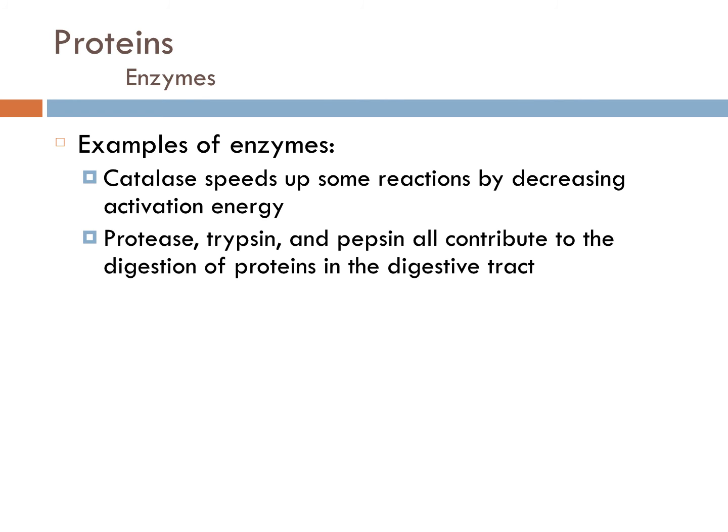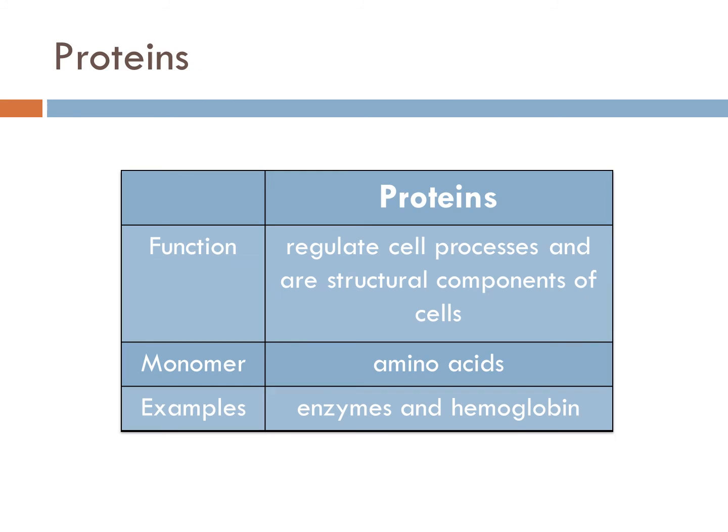Protease, trypsin, and pepsin all contribute to the digestion of proteins in the digestive tract. Those proteins aid in breaking down the food that you eat so that it can be absorbed by your blood. To summarize: proteins function to regulate cell processes and make up structural components of cells. The monomers are amino acids, and examples of proteins are enzymes and hemoglobin, which is a component of your blood.